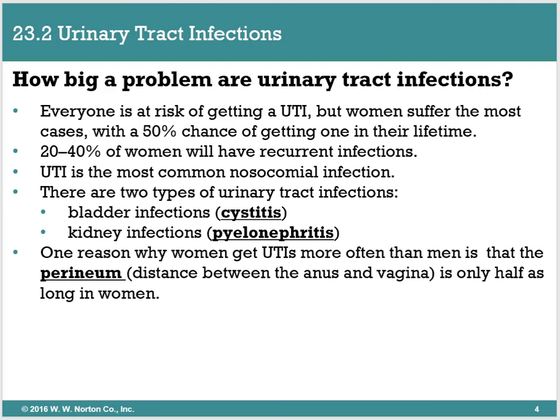There are two different types of UTIs: the bladder infection or the kidney infection — the upper or lower part of the urinary tract. One reason women tend to get more UTIs than men is because of the anatomy of where the anus and the vagina are. Men have the penis which is further away from the anus, whereas in women the perineum — the distance between the urethral opening and the anus — is definitely smaller.